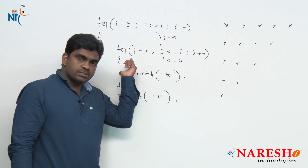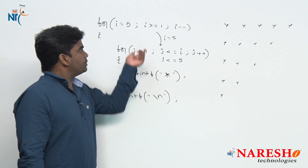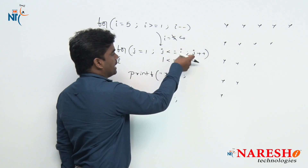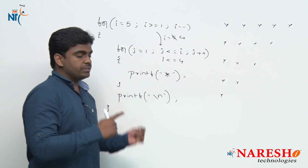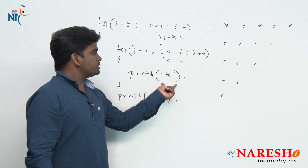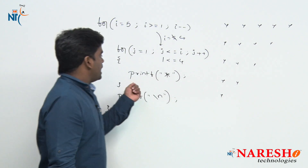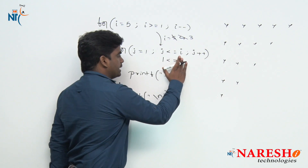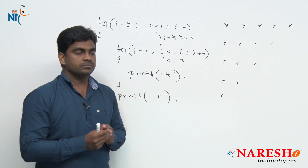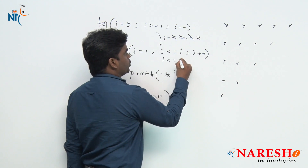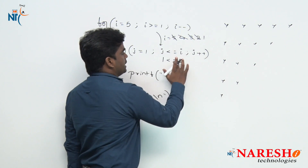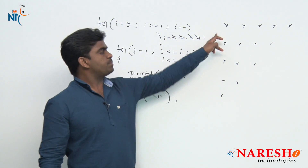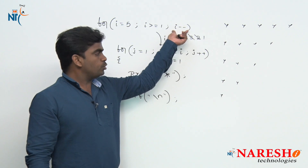Once the inner for loop completes, it sends control to the next line and continues with the outer loop. i value becomes 4, j value restarts at 1 but only up to i which is 4 — so it executes with values 1, 2, 3, 4, giving 4 iterations and printing 4 stars. Next i value becomes 3, j starts at 1, repeats for 1, 2, 3 — 3 stars it prints. Next i value 2, it repeats only 2 times. Next i value 1, it repeats only 1 time and prints 1 star. Whenever the outer loop becomes 0, it terminates. This is how we print this pattern using minus minus in the outer loop and plus plus in the inner loop.